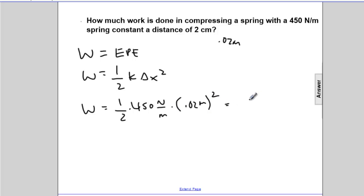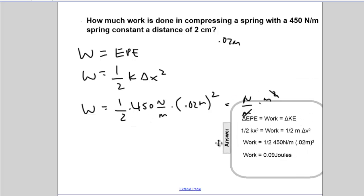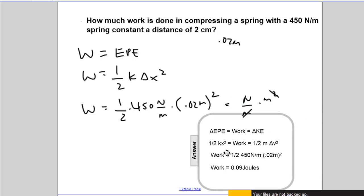We know that Nm times m squared will cancel and give us Nm, which are Joules. And then finally, 1 half times 450 times .02 squared will give us .09 joules worth of work.